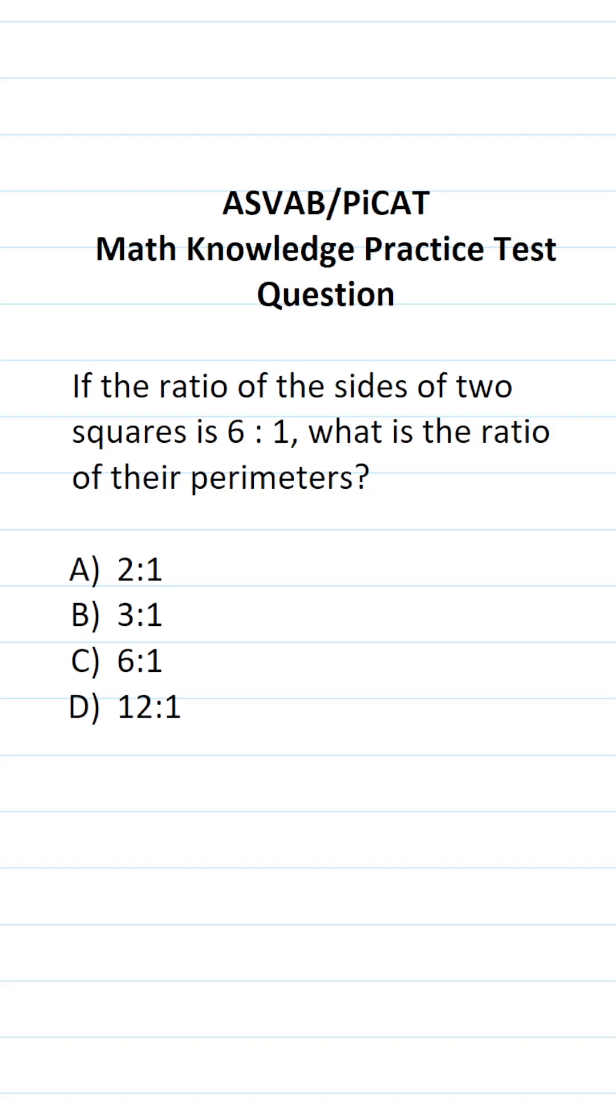This math knowledge practice test question for the ASVAB and PICAT says, if the ratio of the sides of two squares is six to one, what is the ratio of their perimeters?